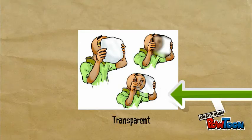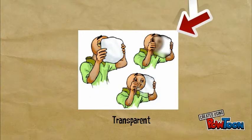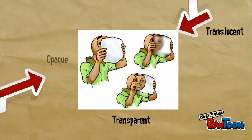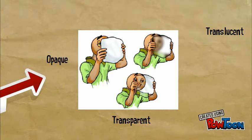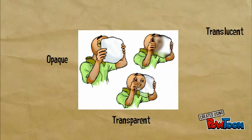Light can pass through many objects; it just depends on the object how that will work. Transparent — most of the light will come through with barely a shadow forming. Translucent — some of the light is able to pass through. And for opaque — none of the light is able to get through the object.